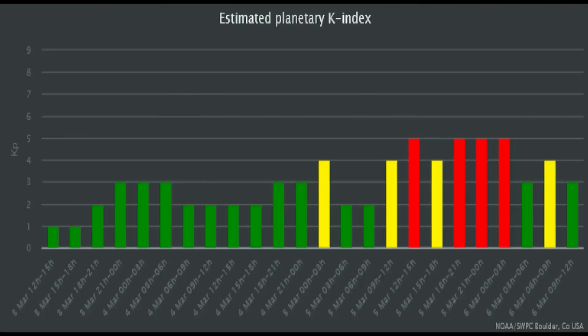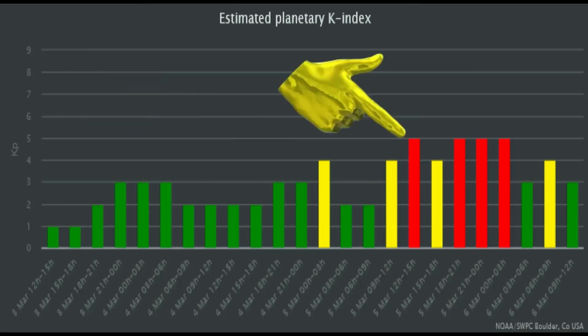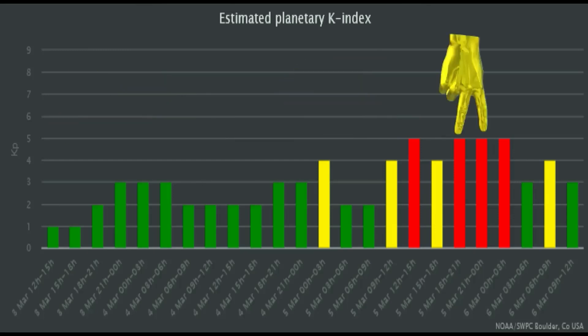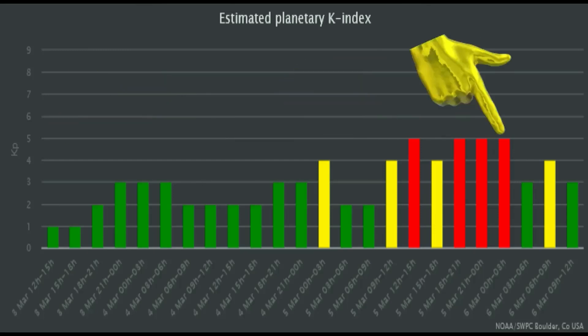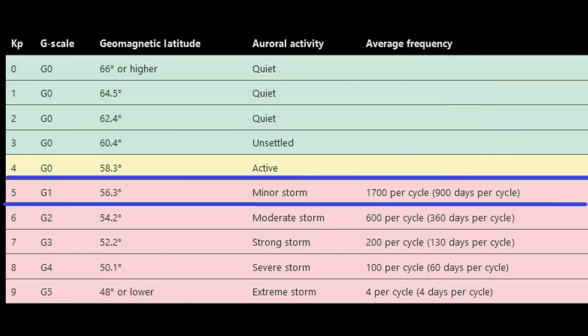This Kp index, based on eight ground-based magnetometers around the world, shows a magnitude of 5 three times on the 5th and once on the 6th. Kp5 equals G1 on the G scale, which interprets as a minor storm. Frequency: 1700 per cycle.